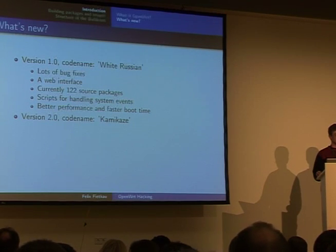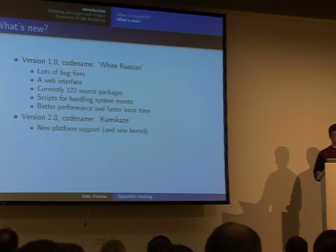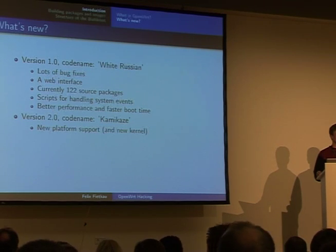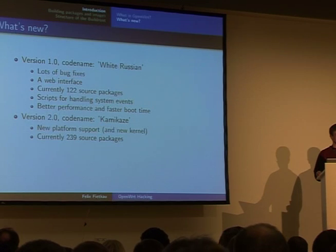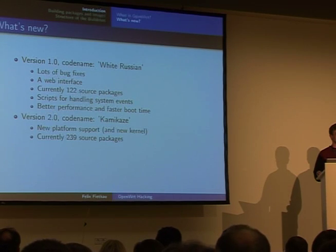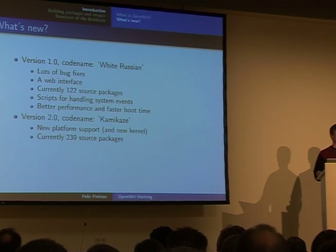The development version of OpenWRT adds some more things. First, new platform support as already mentioned, and also the new kernel — we currently have 2.6.15 release candidate 6. In the development version there are actually 239 source packages, a whole new lot of software. You can have a look at our snapshot builds to figure out what these packages are; there are just too many to name here.